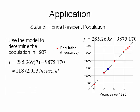Let's use this model to determine the population in 1987. The year 1987 corresponds to x equals 7. Substituting into the formula gives 285.269 times 7 plus 9,875.170, which is approximately 11,872.053 thousand, meaning 11,872,053 Florida residents.